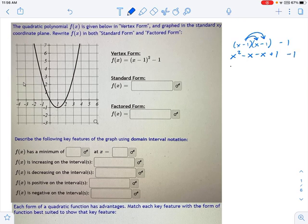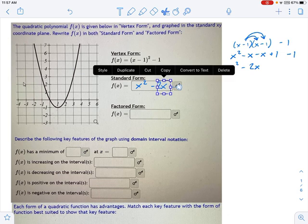So as you combine everything together, take a look at what we have. We have x squared minus 2x, and then the plus 1 minus 1 cancels out. So here's our standard form, x squared minus 2x. All the parentheses are gone. That's what standard form basically means.